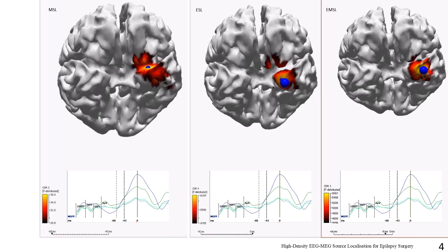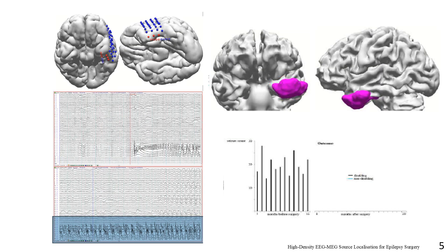Slide 5 demonstrates restriction to the left anterior pole, from the same patient as the previous slide, where the MEG solution changed the surgical plan such that a hippocampal depth electrode was placed in addition to a lateral temporal grid. The seizure captured at bottom left demonstrates clear onset in the hippocampal depth anterior electrodes, 30 seconds prior to propagation to the inferior margin of the lateral temporal grid.